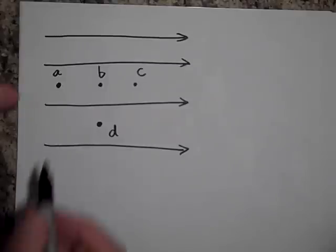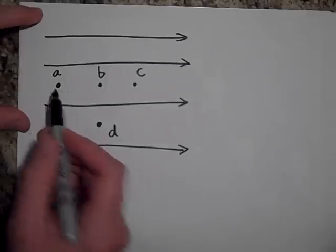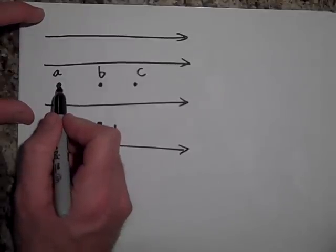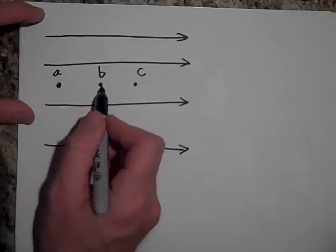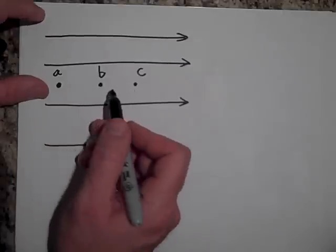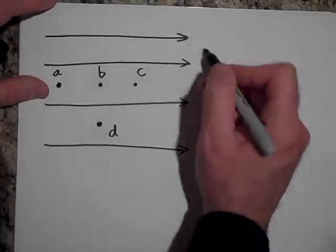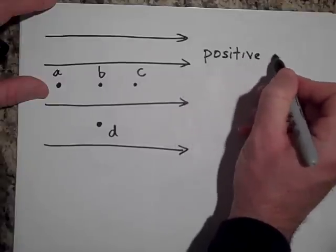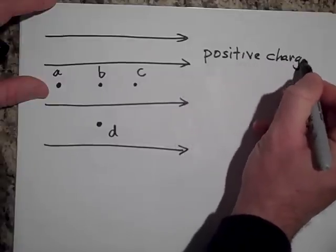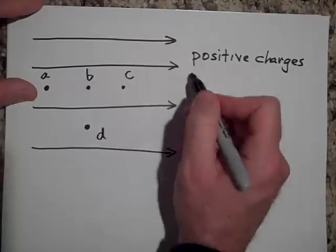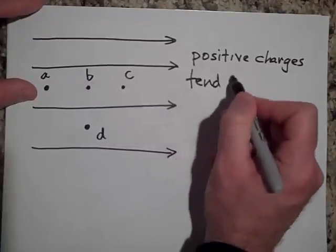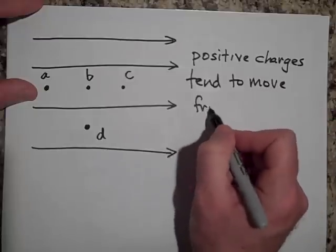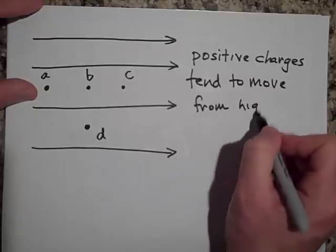Okay, the answer is that A is at the highest potential, and that's because if I put a positive test charge here it will zip to B and then to C. And so positive charges tend to move from higher potential to lower potential.